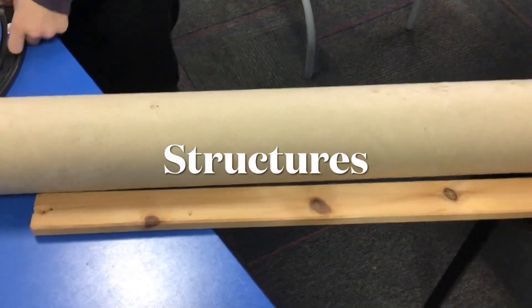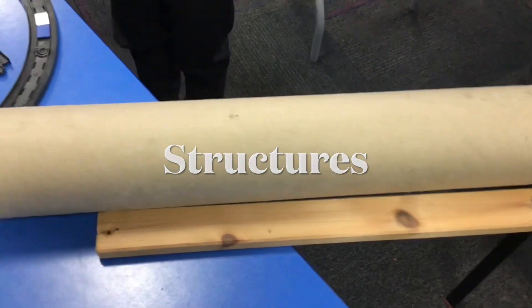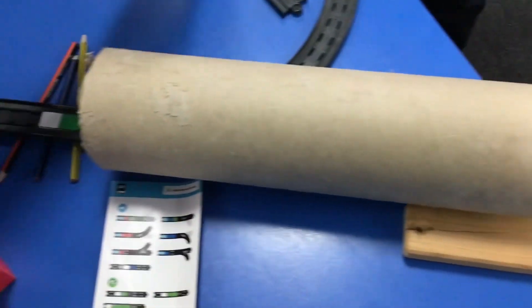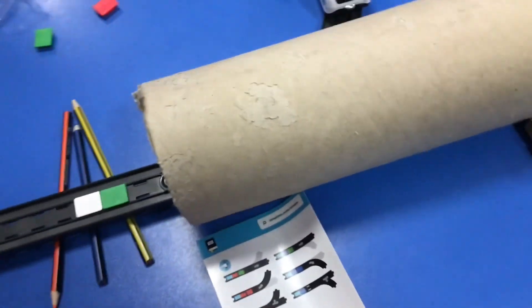Well here I am at Teagues Bridge and we're having such fun because we're talking about structures and we've used an old carpet roll to make a big tunnel and it goes across a big river so it needs some support.